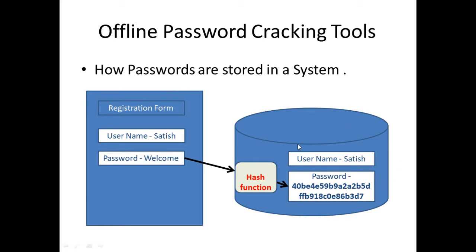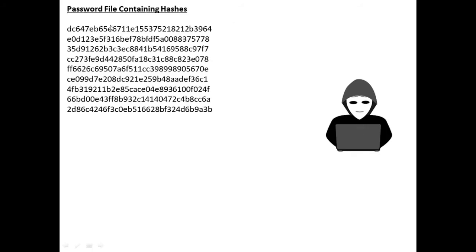A hacker somehow gets the list of all hashed passwords from a database — they retrieve all the hash values. The challenge is to identify what plain text corresponds to each hashed password. However, as you know, hashing algorithms are irreversible, so the hacker cannot simply reverse them and must find another strategy.